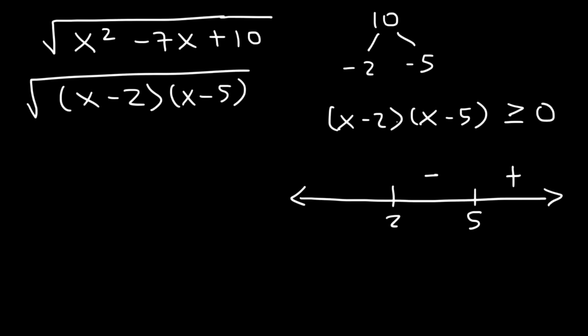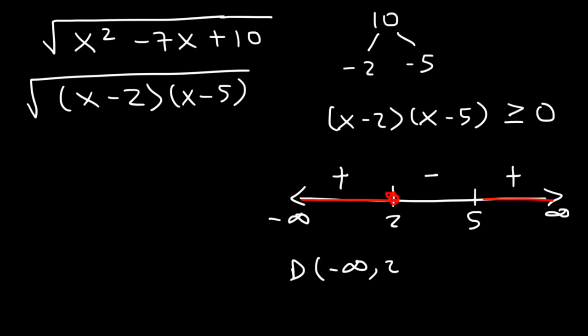We cannot have a negative number inside the square root — it won't give us a real number. So we want the regions where the expression is positive. The domain is going to be from negative infinity to 2 — including 2 because it's greater than or equal to — so we use a bracket at 2, then union, starting back at 5 going to infinity. So that's the domain for this particular function.